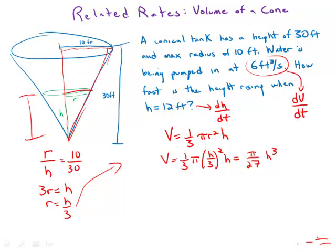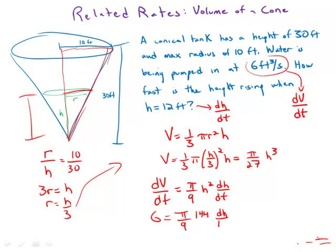Now we're ready to take the derivative. Differentiating with respect to time: dV/dt equals pi over 9 times h squared times dh/dt. We know dV/dt is 6, and h is 12, so h squared is 144. This gives us 6 equals pi over 9 times 144 times dh/dt.